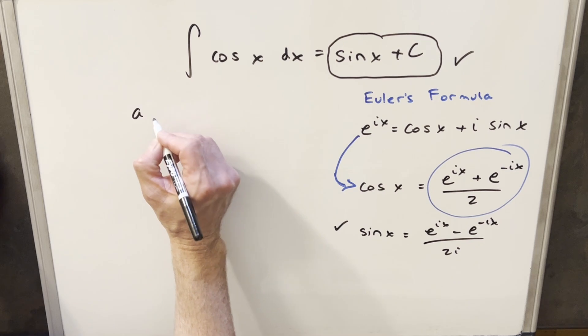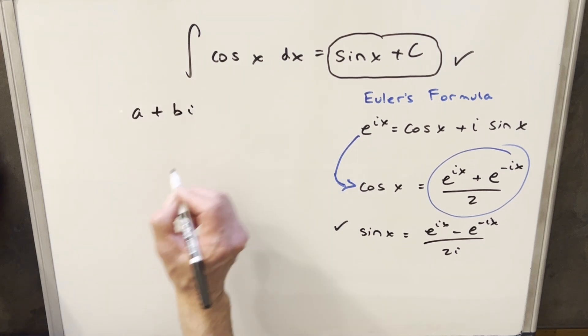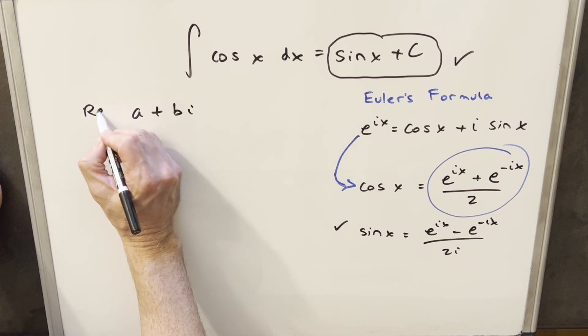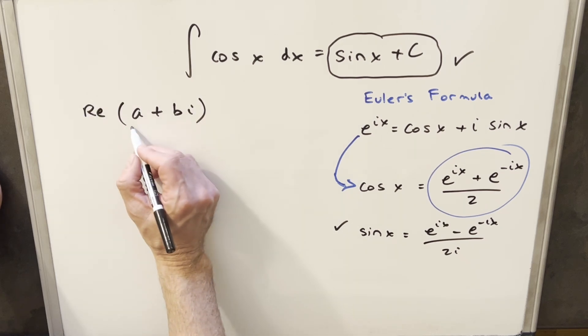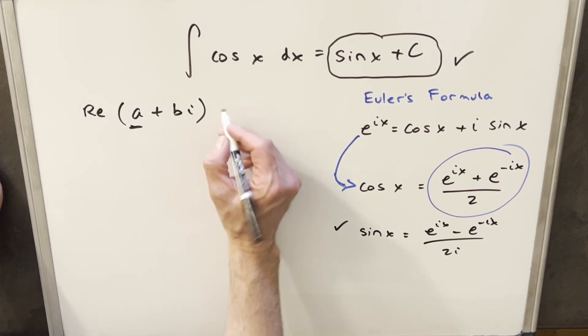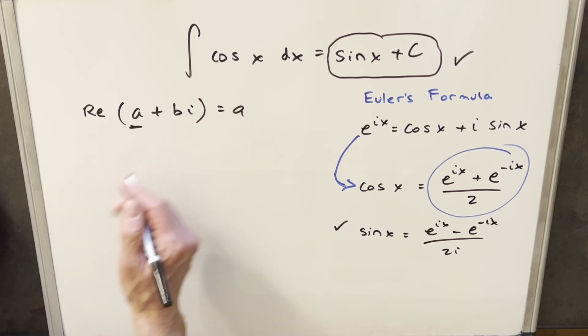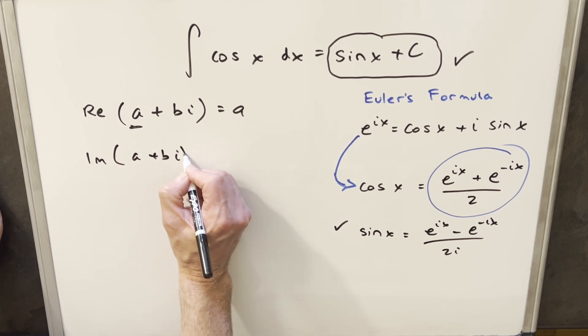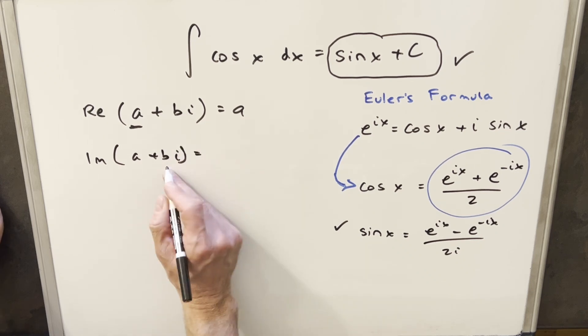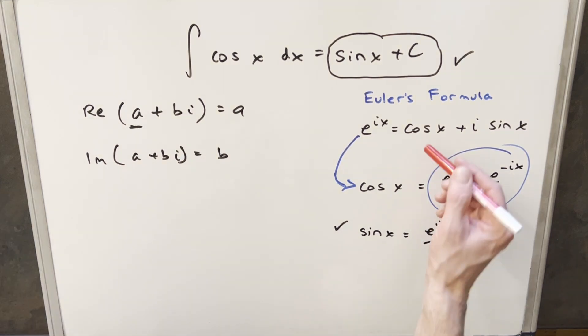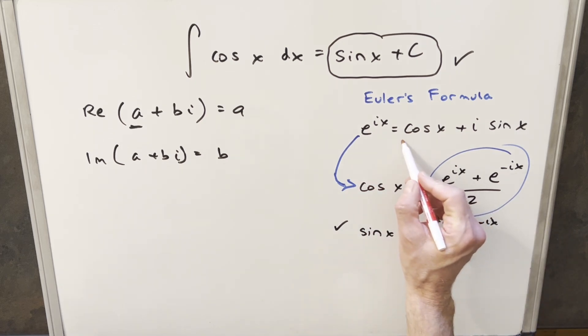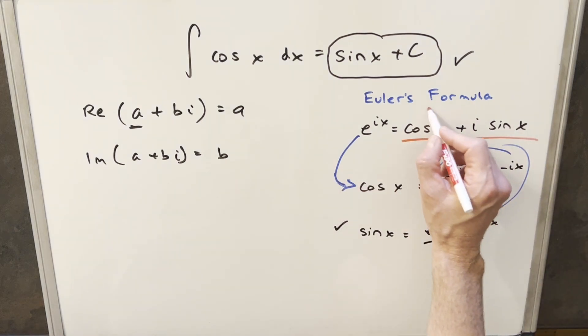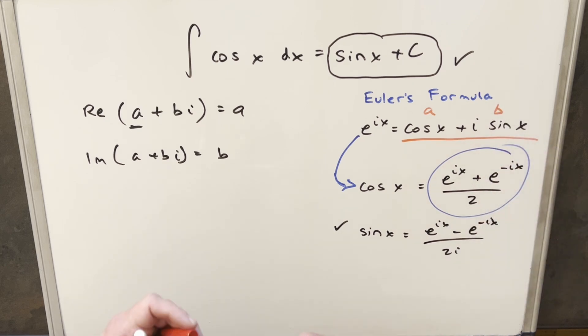So I'm going to do is write down my general form for a complex number a plus bi. And we have this notation that if we want to take the real part of a plus bi, it's just going to be this first part, the real part is just going to be a. And then we also have this notation if we want the imaginary part of this, it's just going to be the second part, it's just going to be the b.